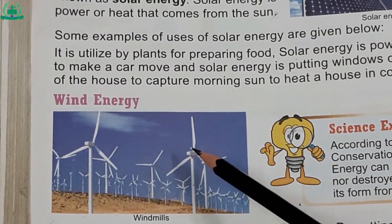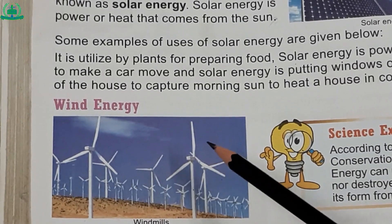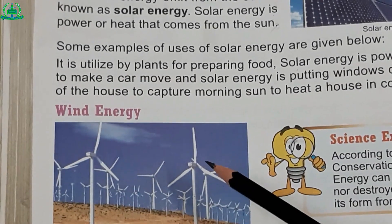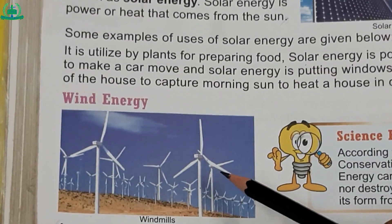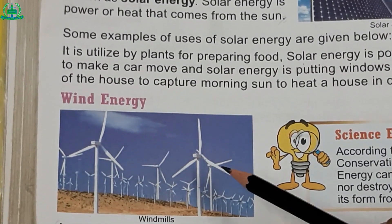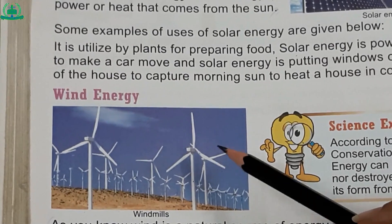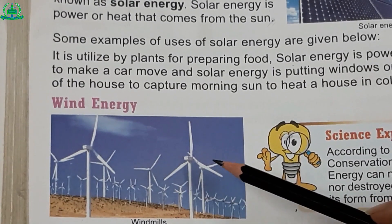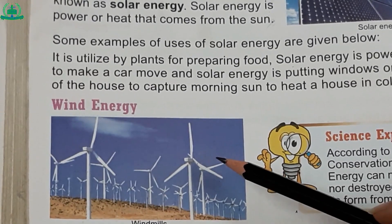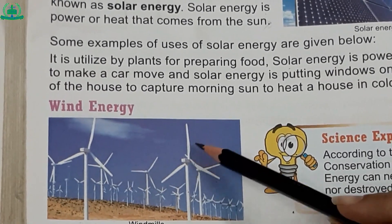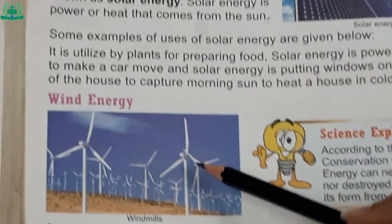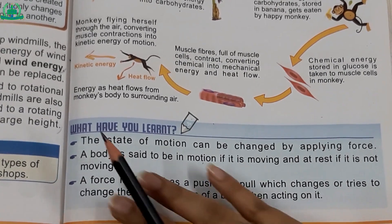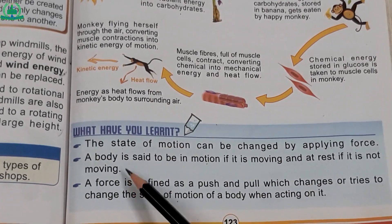By setting up windmills, the energy of winds can be utilized to generate electricity. The energy of wind converted into a useful form — usually electric current — is called wind energy. A windmill is a machine which converts the energy of wind to rotational energy with the help of large blades attached to it. See page number 123.